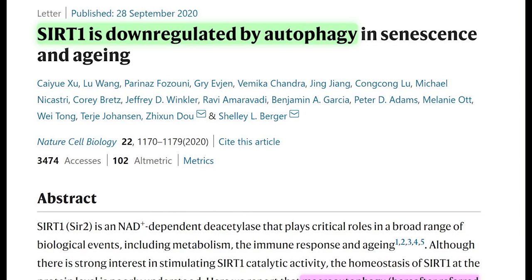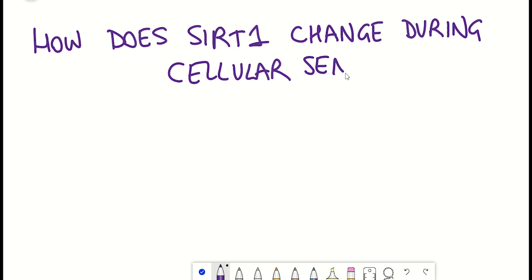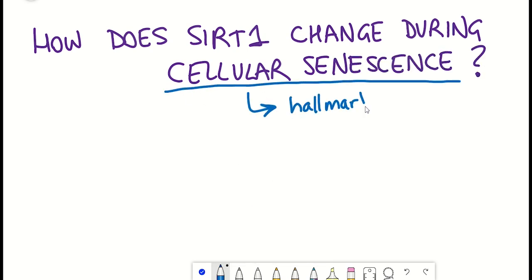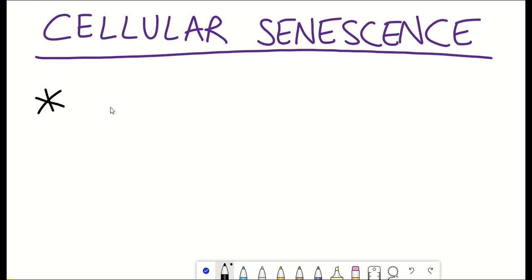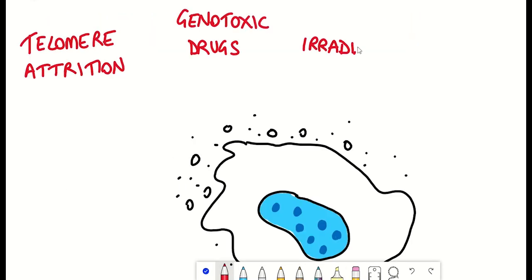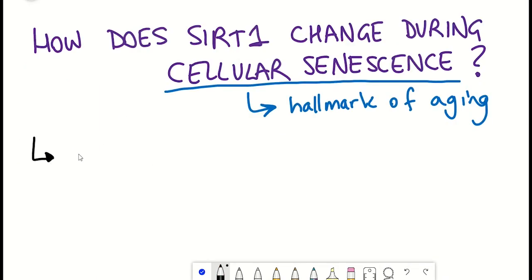So first off, they try to see how the protein levels of SIRT1 changes during the development of cellular senescence. Cellular senescence is one of the hallmarks of aging, with the number of senescent cells increasing with age. Senescent cells are cells that have entered a state of cell cycle arrest, and this can be induced by a variety of different upstream stressors within a cell. Interestingly, overexpression of SIRT1 has already been shown to delay senescence in a human cell line.